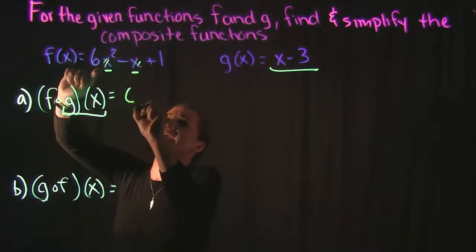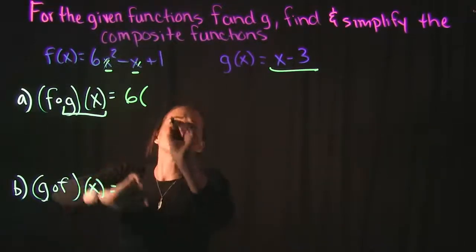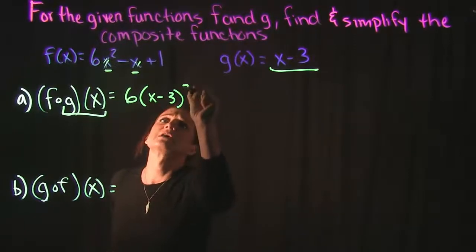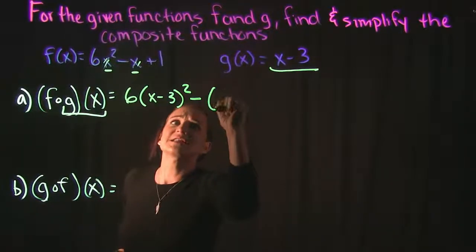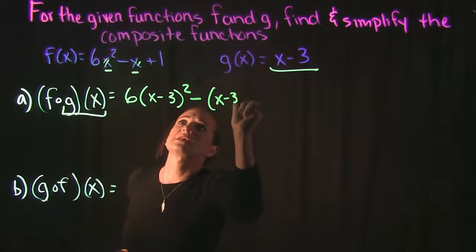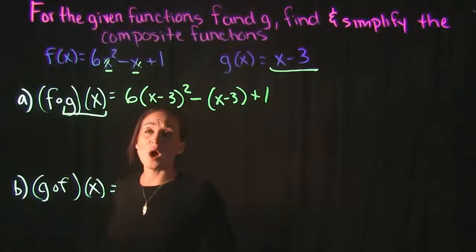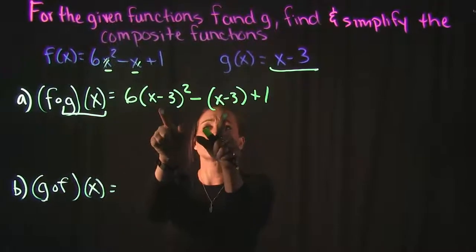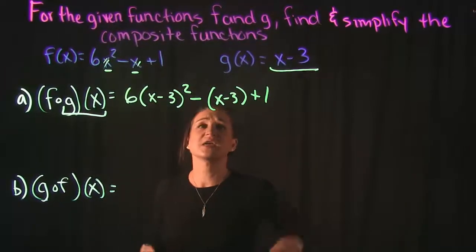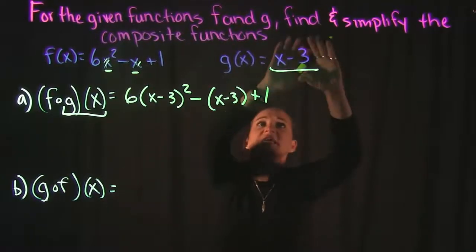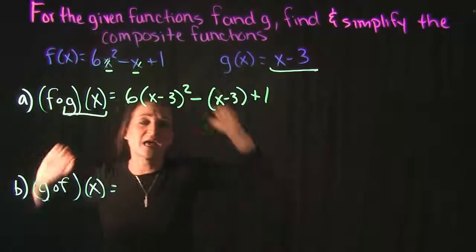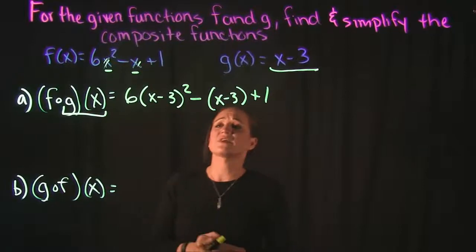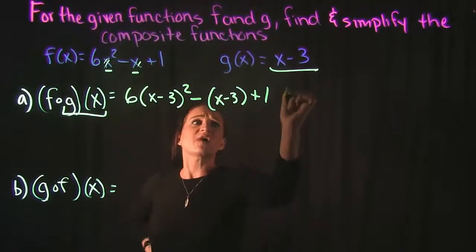So that will look like 6 times x which is x minus 3 squared minus x which is x minus 3 plus 1. So you can see for the two x's I had here all I did was plug in x minus 3 since that's what g of x is. So it's taking g of x putting it into f of x and then simplify.